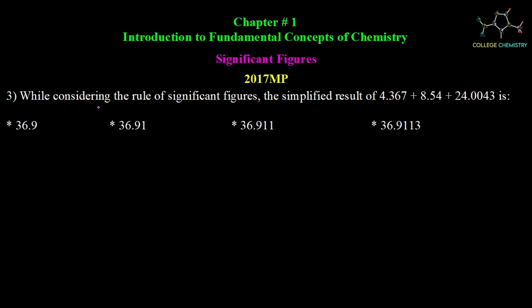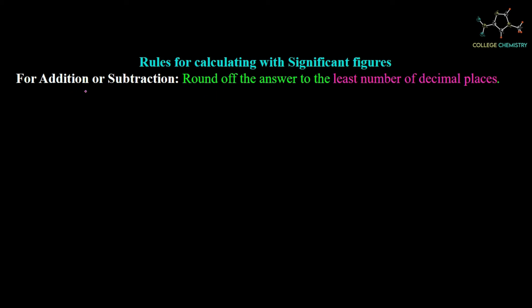Question number 3: considering the rule of significant figures, what is the simplified result of 4.367 + 8.54 + 24.0043? Four options are given. For addition and subtraction, the rule is: the final answer must be rounded off to the least number of decimal places. When we add these three numbers, the calculator gives 36.9113.